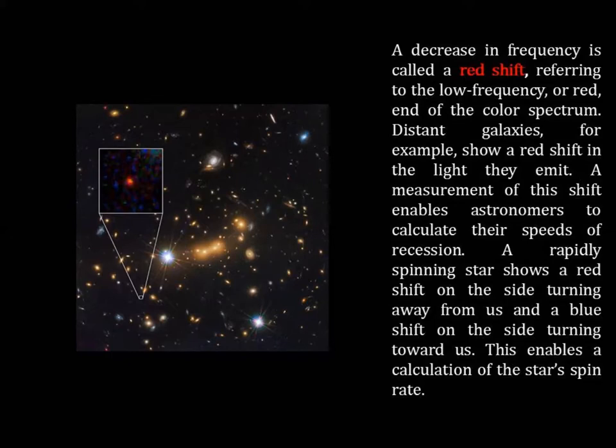An increase in frequency is called a blue shift because the increase is towards the high frequency or blue end of the color spectrum. A decrease in frequency is called a redshift, referring to the low frequency or red end of the color spectrum. Distant galaxies, for example, show a redshift in the light they emit. A measurement of this shift enables astronomers to calculate their speeds of recession. A rapidly spinning star shows a redshift on the side turning away from us and a blue shift on the side turning towards us. This enables a calculation of the star's spin rate.